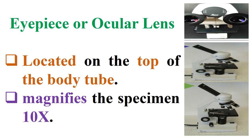The first part of the light microscope is the eyepiece or ocular lens, located on the top of the body tube. It magnifies the specimen 10x.